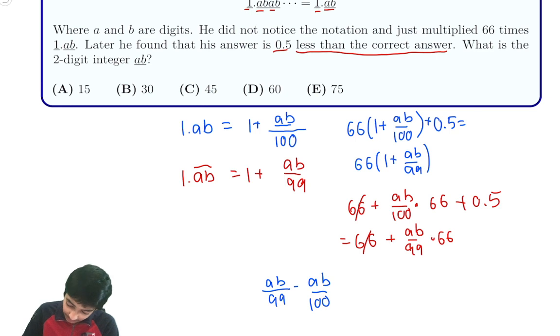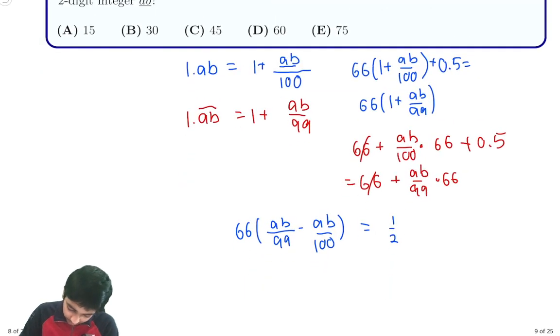We know that 66 times this quantity is equal to 0.5, or 1 half. And then from here we can simplify further and see that 66 times AB over 99 minus AB over 100 is 1 half.